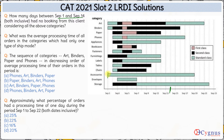We go through each day: September 1 had a booking, September 2 had a booking, September 3 had a booking in the envelopes category, September 4 had a booking in tables, September 5 had a booking in furnishing, September 6 had a booking in fasteners, and September 7 had a booking in paper.